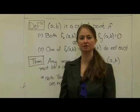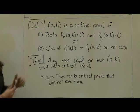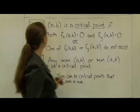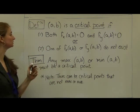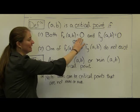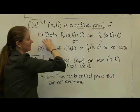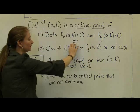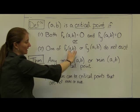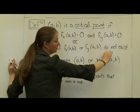Let's formalize some of the things we just talked about with a couple of definitions. A point (a,b) is a critical point if one of two criteria holds: either both the partial derivative with respect to x and the partial derivative with respect to y equal zero, or the partial derivative with respect to x or the partial derivative with respect to y at point (a,b) does not exist.